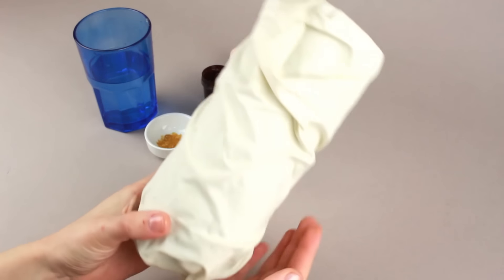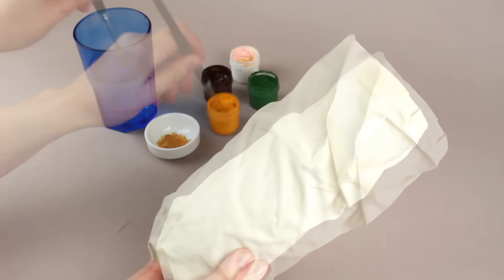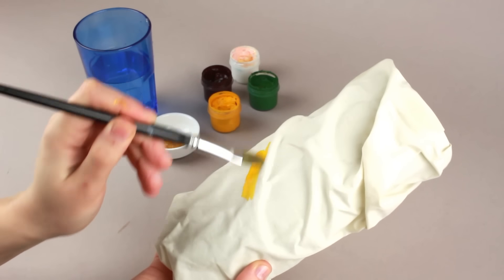After the cloth is dry, add some color to it. First, paint yellow following the fold shape.